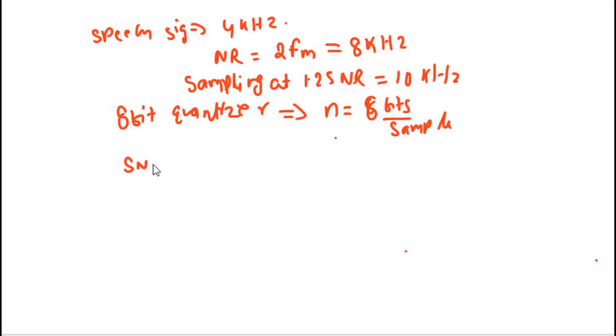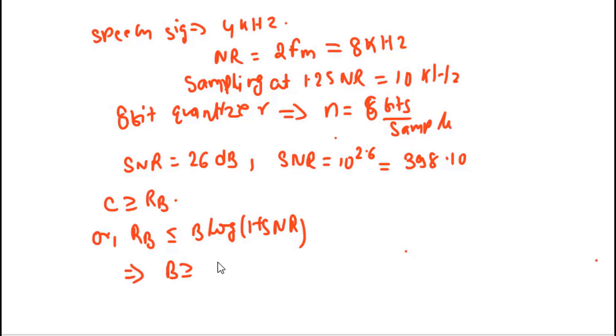Also, you have SNR of 26 dB, which is in logarithmic scale. In linear form, SNR will be given by 10 to the power 2.6, which equals 398.11. For perfect transmission, C should be greater than equal to Rb, or Rb should be less than equal to B times log₂(1 plus SNR). You can write this as B times log₂(1 plus SNR). By putting the value of Rb and SNR, you get B should be greater than or equal to 9.259 kHz, which is your signal bandwidth.